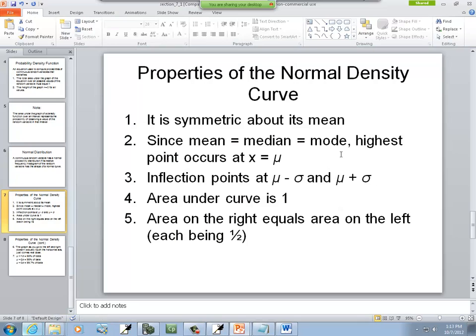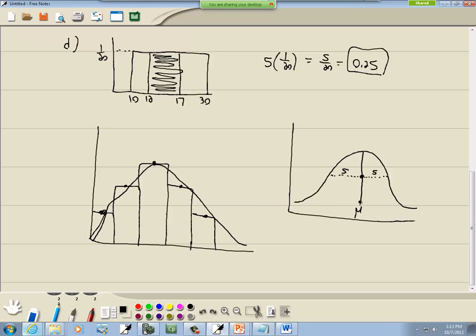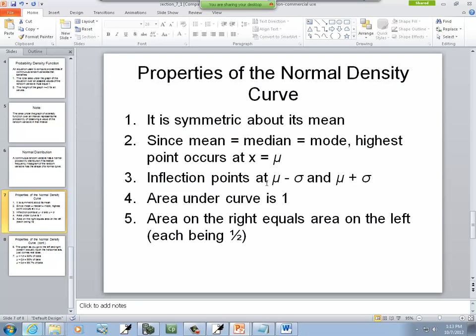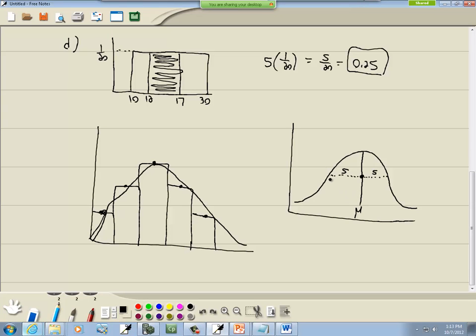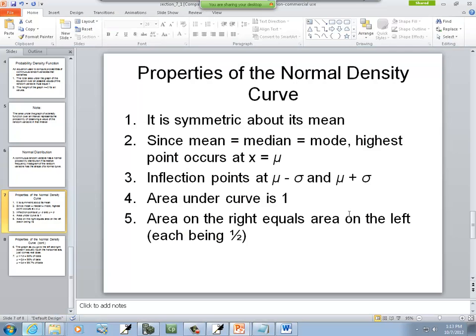Since the mean equals median equals mode, highest point occurs at x equals mu. And this is, so this is mu, our highest point. Inflection points at mu minus one standard deviation, mu plus one standard deviation. Now, inflection points, if I look at this part of the graph right here. See how it's curved up? That's concave up. See this point right here? It's curved down. That's concave down. So the inflection point is where it changes.